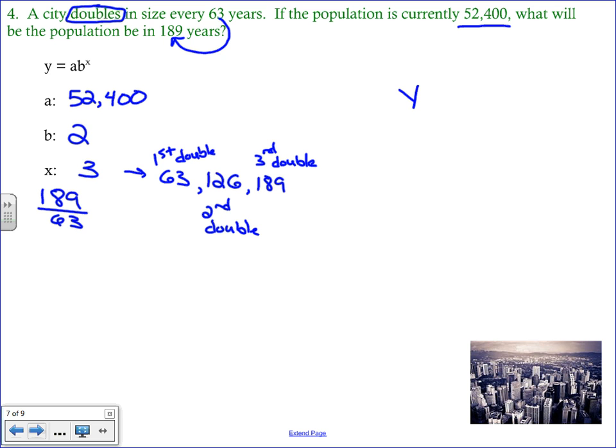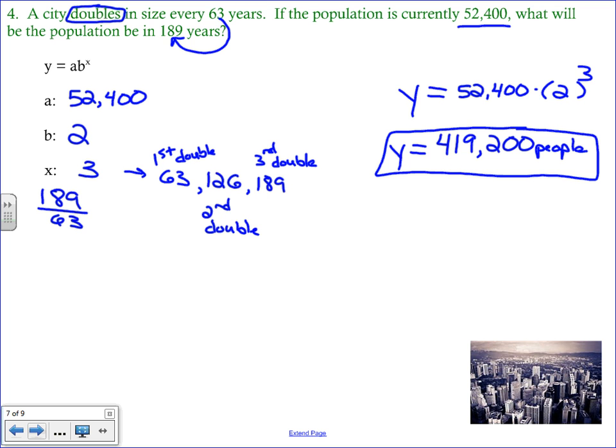All right. So now let's plug this into our equation. Y equals 52,400 times 2 to the third. And like we've done before, at this time, you can press pause and work things out on your calculator. And hopefully when you did, you got 419,200 people. And again, whenever you're dealing with population of people, if you get a decimal answer when you're calculating things, although this one wouldn't give you one, make sure you always round to the nearest person.